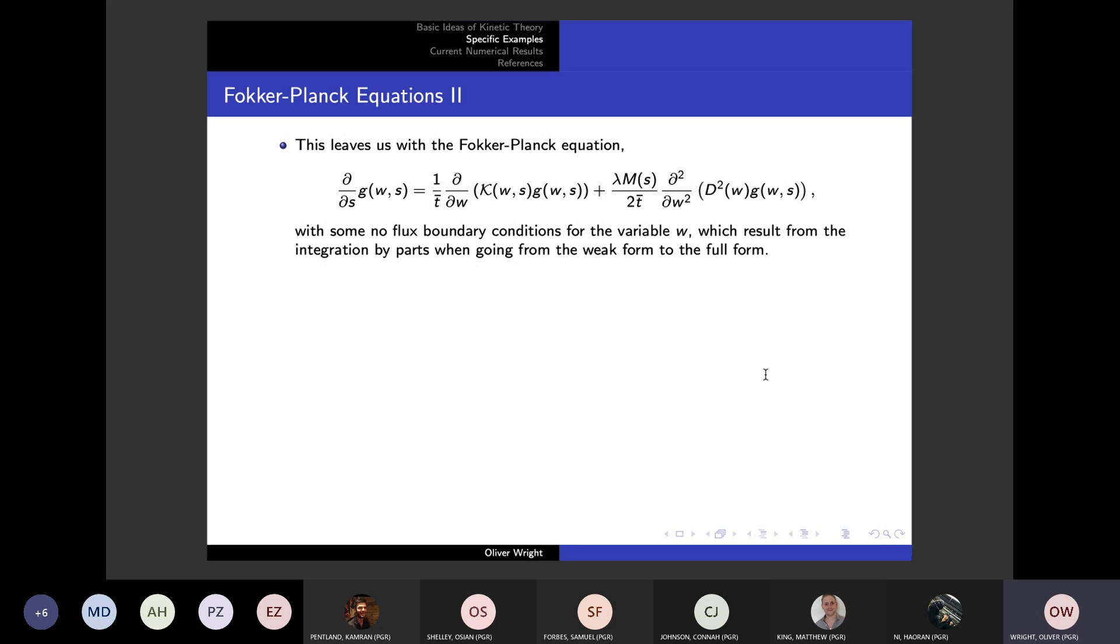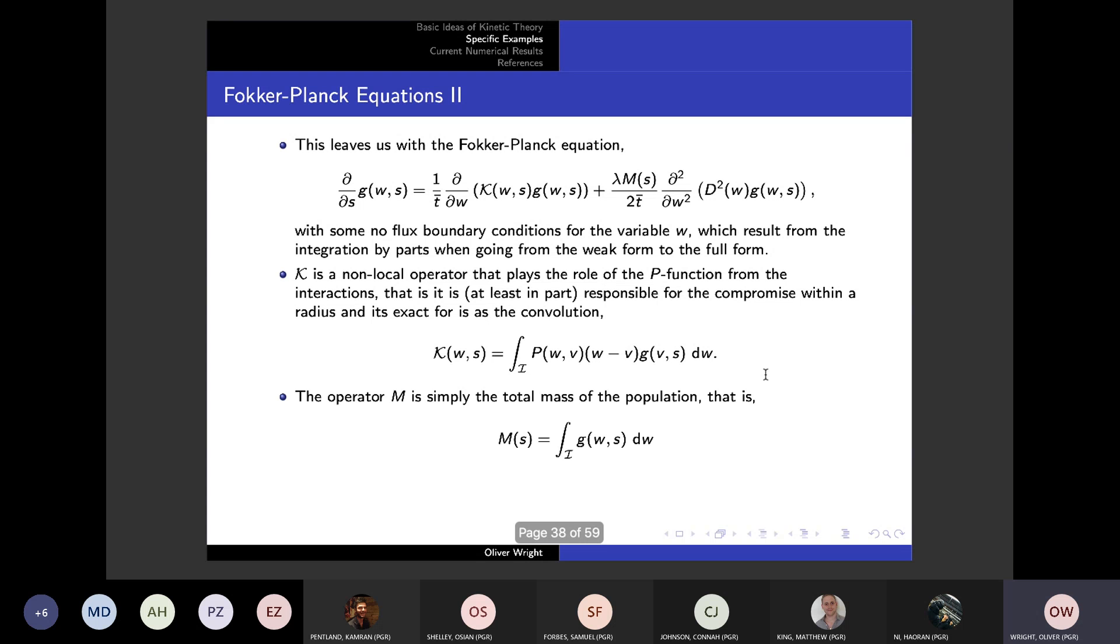This process is long, not particularly complicated, but quite a long process. In broad strokes, we take the weak form of our Boltzmann equation and substitute in the interactions, then use a specific type of time scaling and take a quasi invariant limit of this. This leaves us with this somewhat nasty looking Fokker-Planck equation.